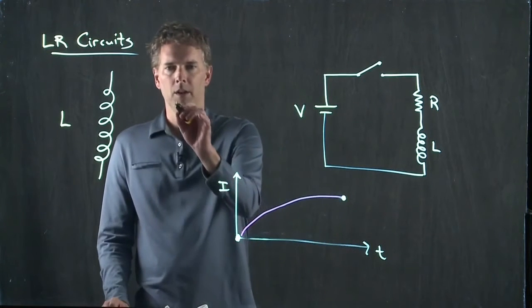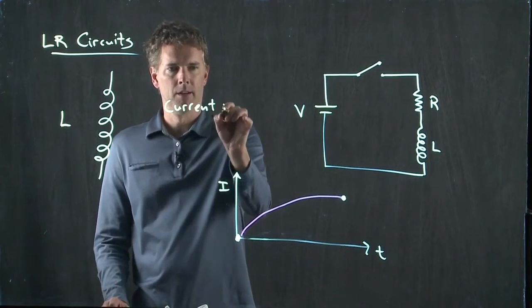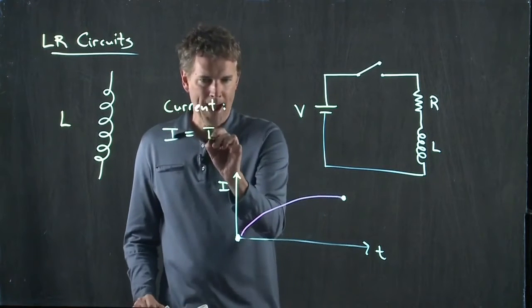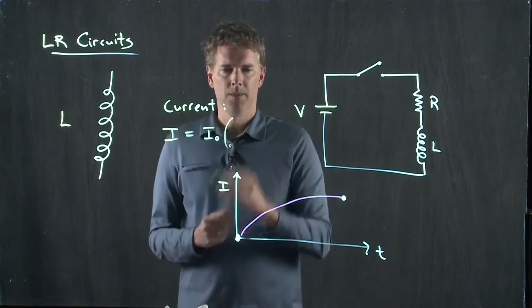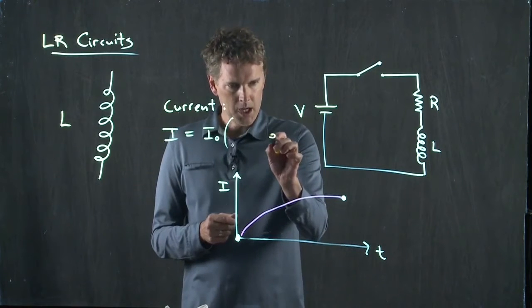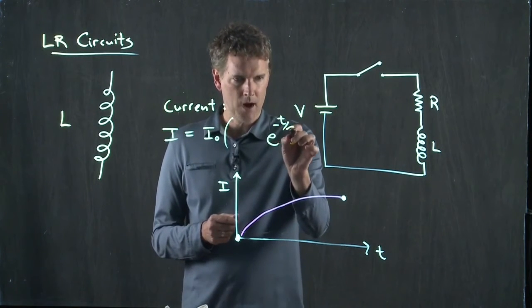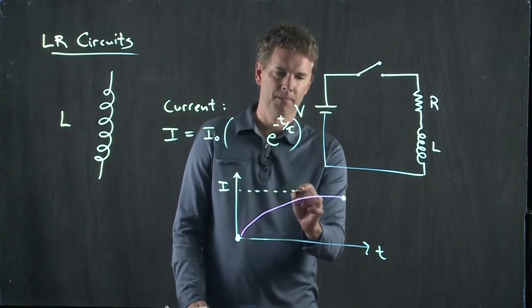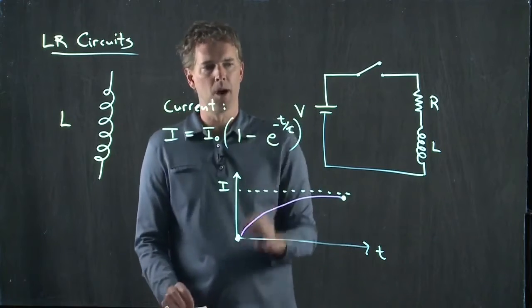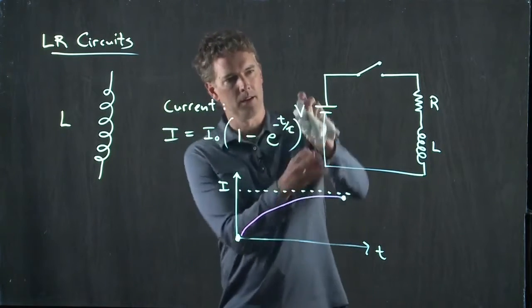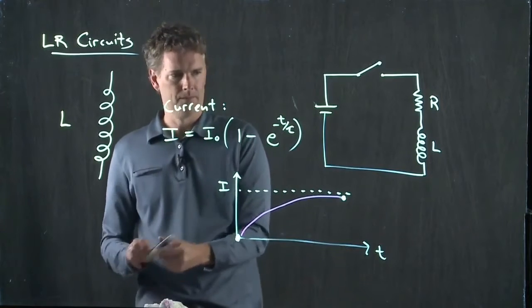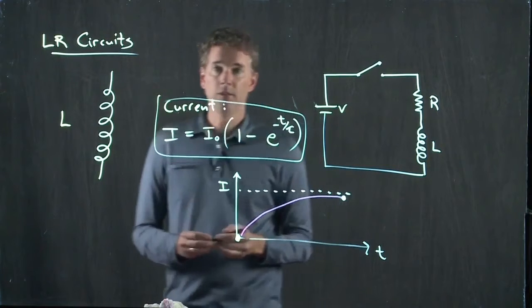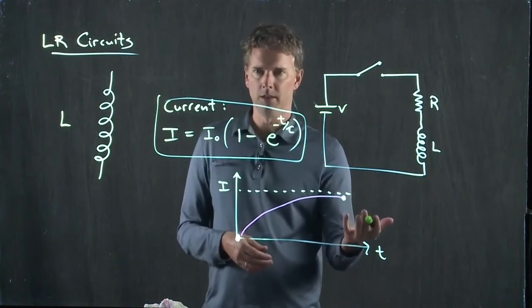Just like we did with the capacitors, the current is going to behave like an exponential. Okay? There's some maximum current that it can have, I naught. We know that there's an E to the minus T over tau somewhere. And now, if we're going to get up to this level of I naught, we have to put a one minus. Let's move this V so we're not confused with that one.